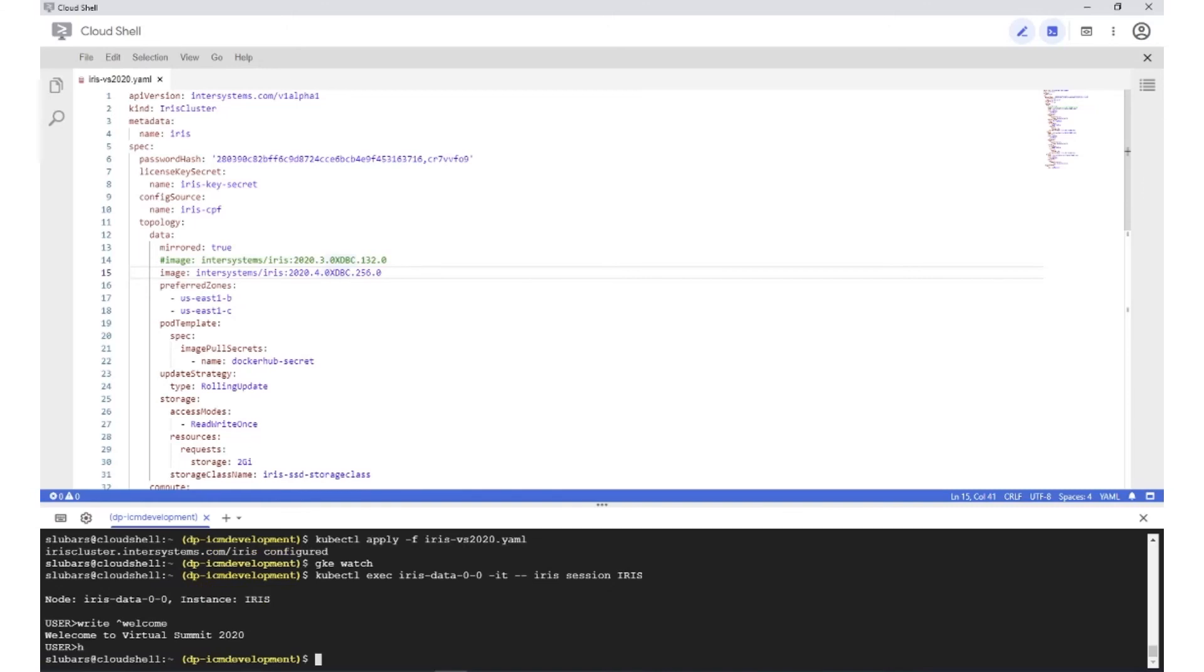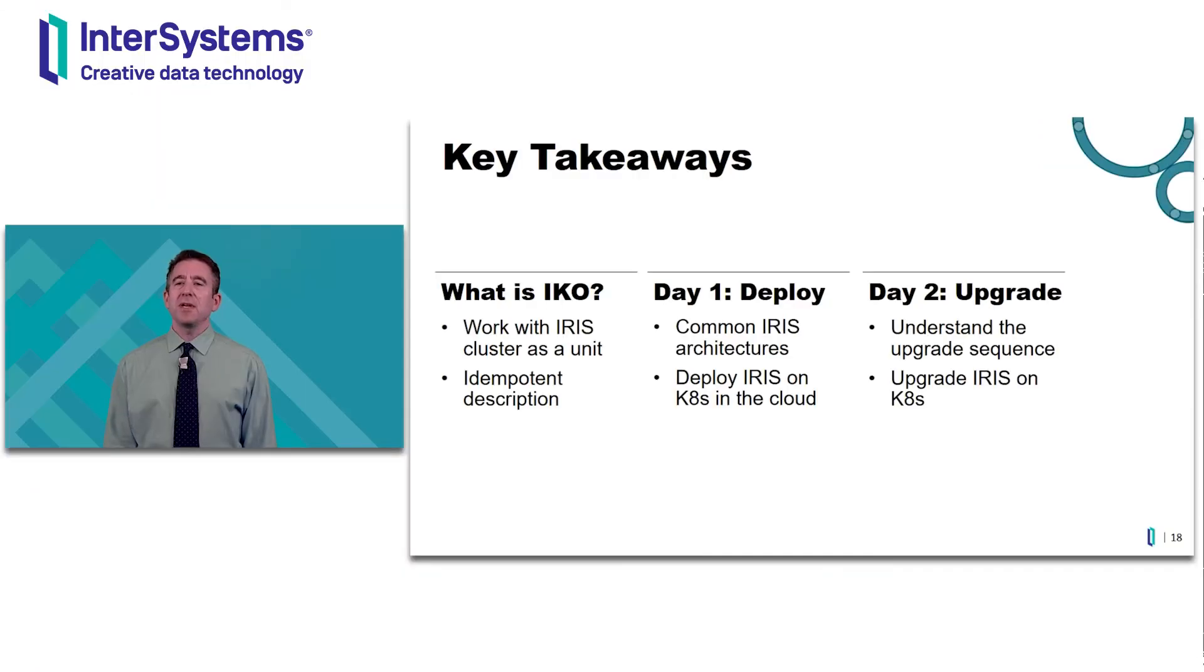So that's how we upgrade Iris using the InterSystems Kubernetes operator. So today we've seen how the Iris Kubernetes operator extends Kubernetes to create a new type representing an Iris cluster. We've seen how to describe an Iris cluster using YAML. We've reviewed several common Iris topologies. We discussed the upgrade process, including its relationship to sharding and mirroring. And finally, we performed an upgrade of an Iris cluster.